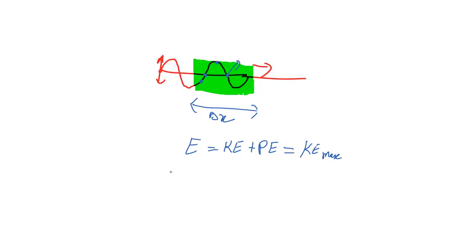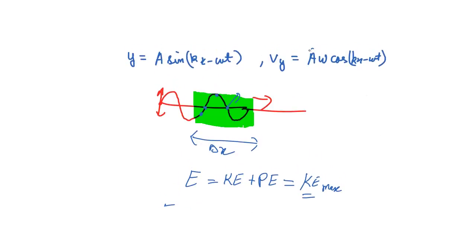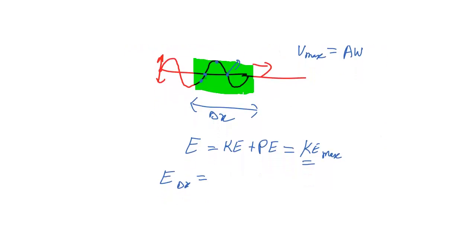The total energy of the δx region equals the maximum kinetic energy summed over all particles. The maximum velocity v_max for every particle is aω, where a is the amplitude (maximum displacement) and ω is the angular frequency. So every particle has the same v_max.